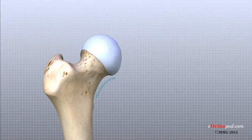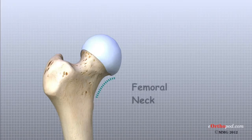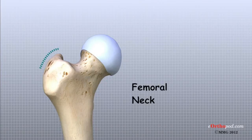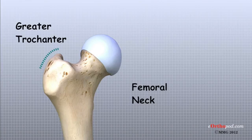The femoral head is attached to the rest of the femur by a short section of bone called the femoral neck. A large bump juts outward from the top of the femur next to the femoral neck. This bump, called the greater trochanter, can be felt along the side of your hip. Large and important muscles connect to the greater trochanter.